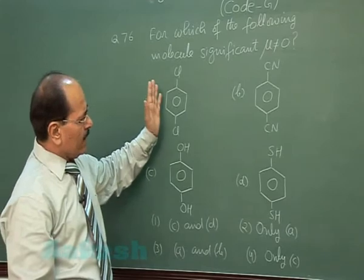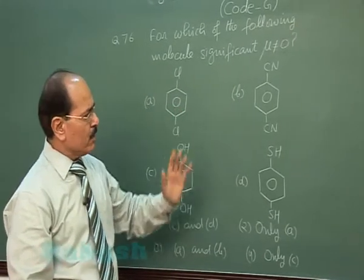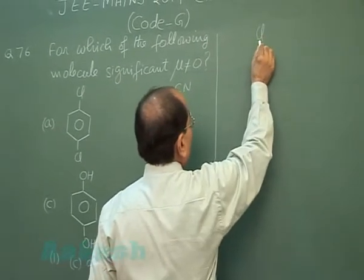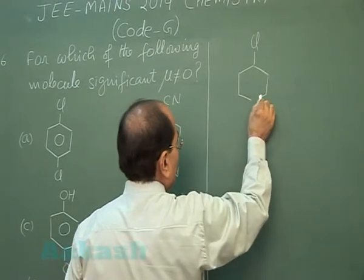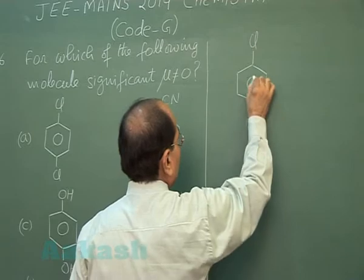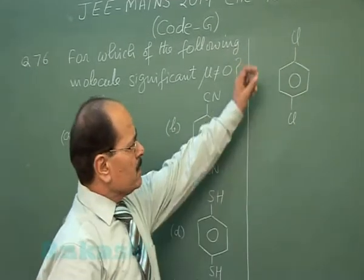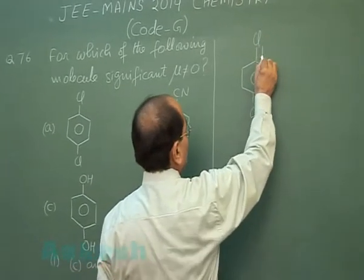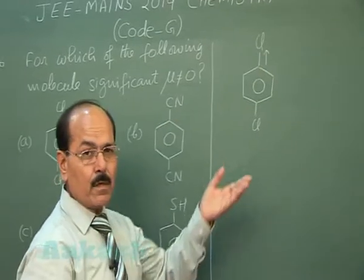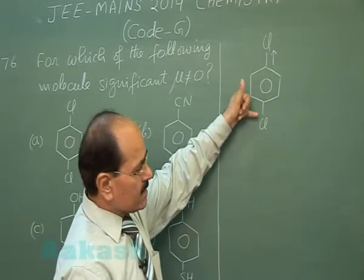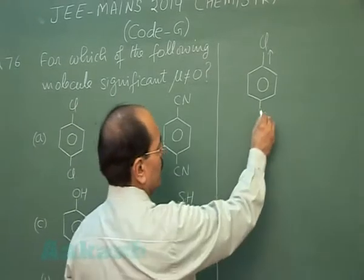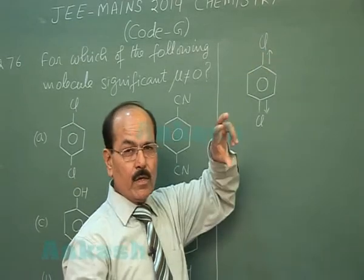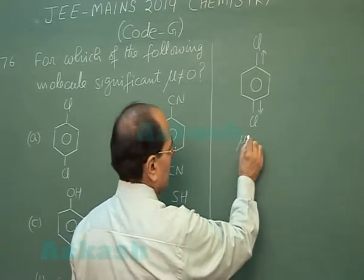Compounds A and B have zero dipole moment. In compound A (1,4-dichlorobenzene), the C–Cl bond is polar with bond dipole moment directed towards chlorine. The other C–Cl bond is also polar with dipole moment towards Cl. These two bond dipole moments are equal and opposite, so they cancel, giving a net dipole moment of zero.